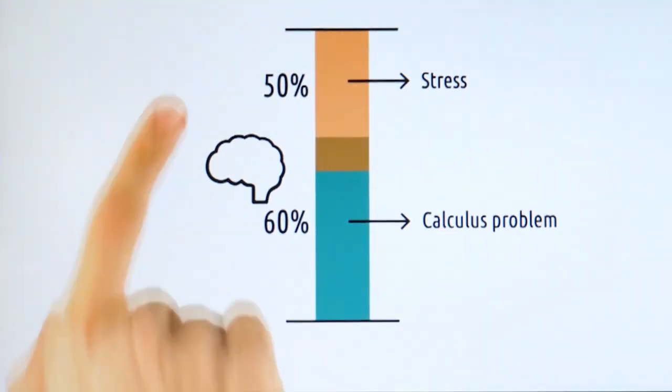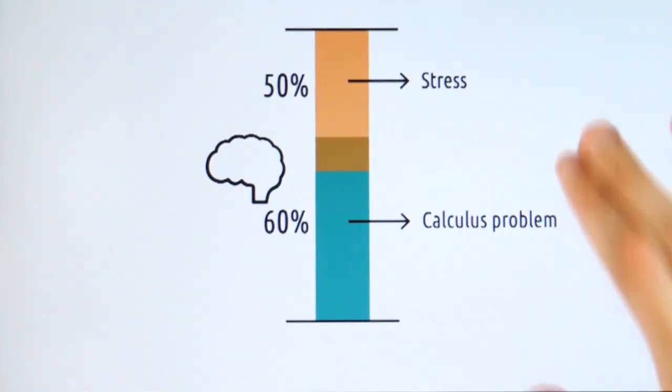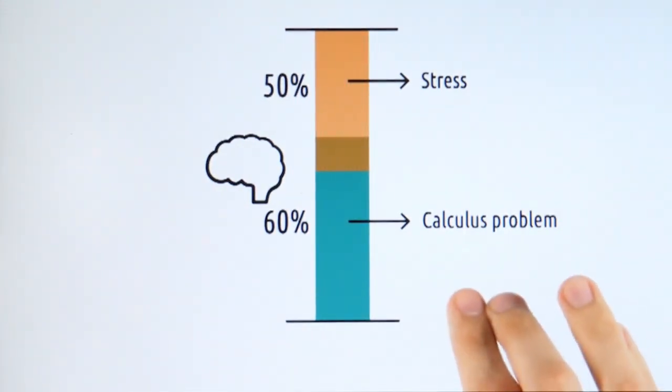Here we see the stress taking up 50% of the cognitive resources you have. Now you don't have sufficient resources to complete the problem successfully. I hypothesize that's why test-taking anxiety can have such a negative effect. It takes resources away from actually working on the test.